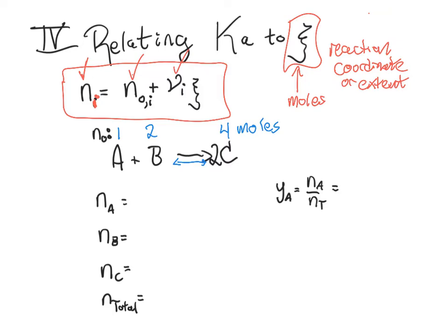So nA, let's see we started with one mole, its stoichiometric coefficient is negative one and so it's 1 minus ξ is how many moles there are as the reaction goes on. B started with two moles, its stoichiometric coefficient is also negative one, so that's what we have there.